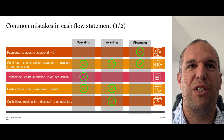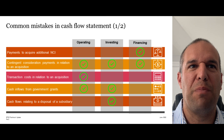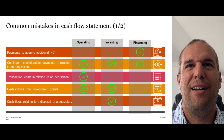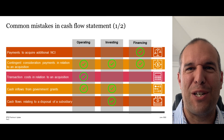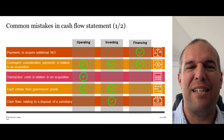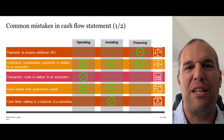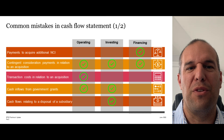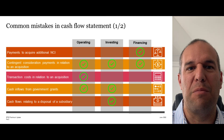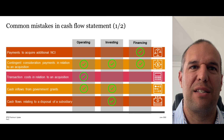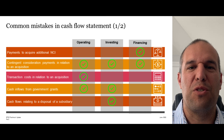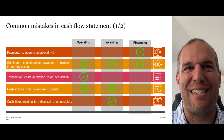Contingent consideration payments related to an acquisition could be operating, investing, or financing, depending on the nature of the contingent consideration and the movement of the final payment relative to what was initially recognized. Transaction costs relating to an acquisition — a lot of the time folks think that is an investing cash flow because it's linked to buying a business, but it actually needs to be classified as an operating cash flow because you don't get to recognize any asset related to those acquisition costs. There is a rule in IAS 7 covering this.